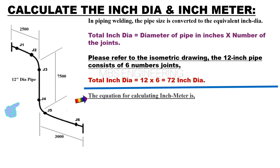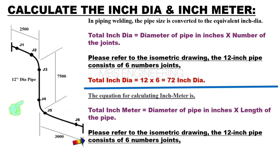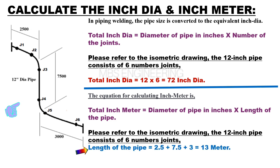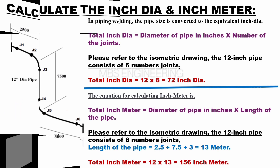We will learn how to calculate the inch meter of the piping. The total inch meter equals the diameter of the pipe in inches multiplied by the length of the pipe. Please refer to the isometric drawing. The 12-inch pipe consists of 6 joints, and the length of the pipe equals 2.5 plus 7.5 plus 3. Therefore, the length of the pipe is 13 meters. Total inch meter equals 12 multiplied by 13. Therefore, the total inch meter is 156.